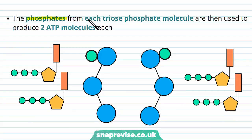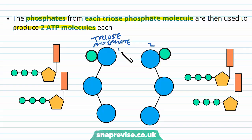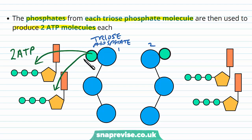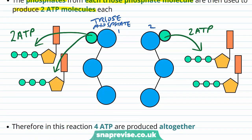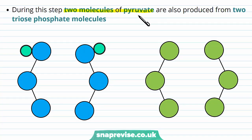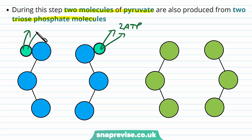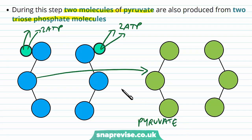At this point, the phosphates on each of the triose phosphate molecules are used to produce two ATP molecules each. So each of the two triose phosphates produces 2 ATP, giving 4 ATP produced altogether. While this is happening, two molecules of pyruvate are made from the two triose phosphate molecules — as the phosphates come off to form ATP, the triose phosphate becomes a pyruvate. So we end up with two pyruvate molecules, and that's the end of glycolysis.